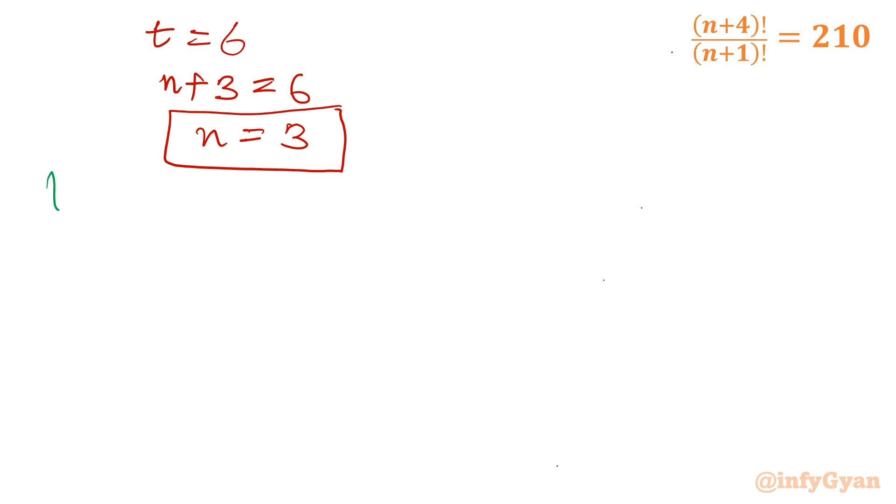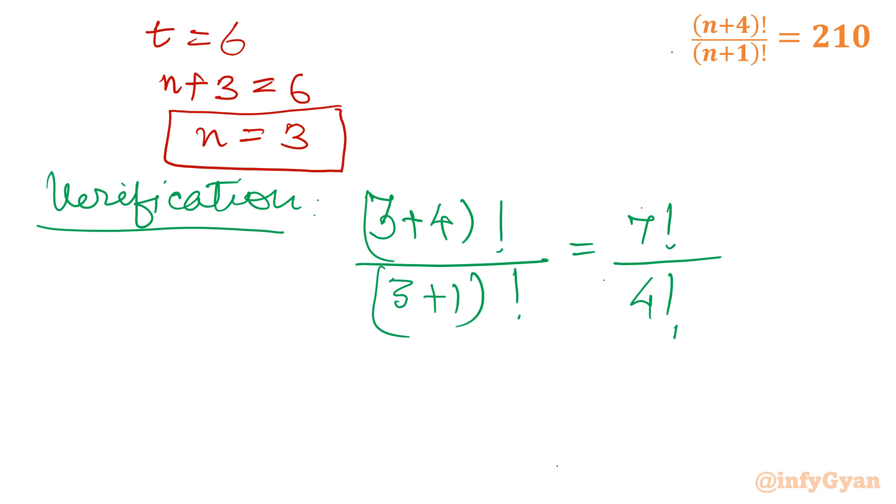Let us verify its value. Verification: (n+4) factorial, so it will become (3+4) factorial over (3+1) factorial. So 7 factorial over 4 factorial. Now check, 7 factorial is 5040, and 4 factorial is 24. So if I divide these numbers, I will get 210. Hence verified. So n equal to 3 is our true solution.